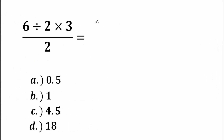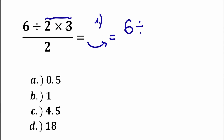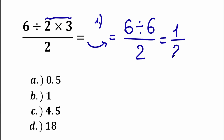Here's the first most common solution. A lot of students say that 2 times 3 equals 6 obviously. So we have 6 divided by 6, then we divide all of this by 2. As a result, 6 divided by 6 equals 1, and 1 divided by 2 gives us 0.5 in decimal form. This corresponds to Option A.